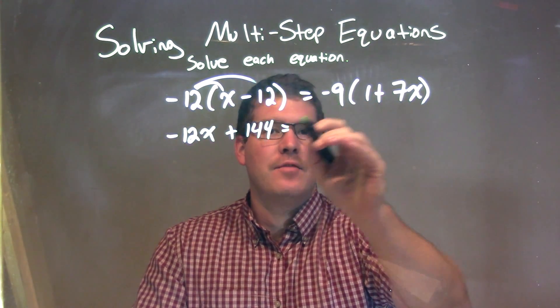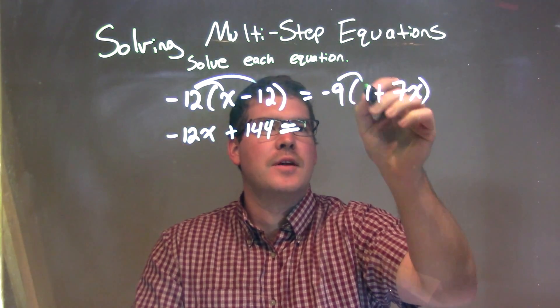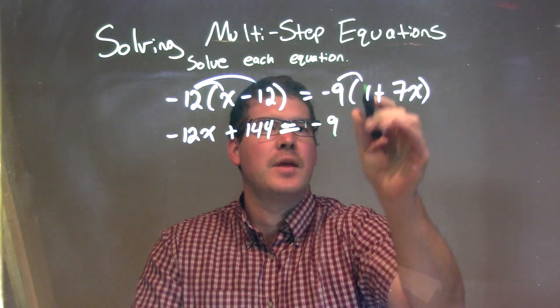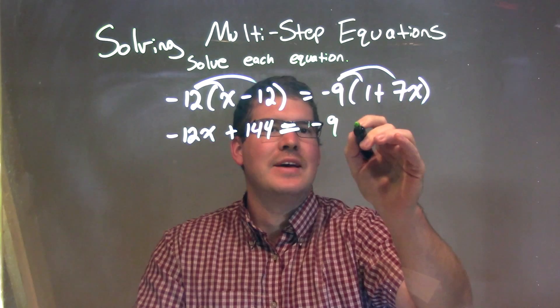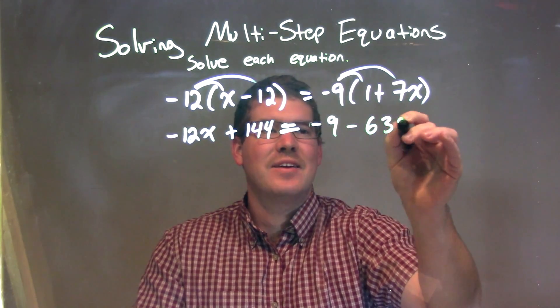Then we have the negative 9. Distribute the negative 9 across. Negative 9 times 1 is negative 9, and negative 9 times 7x is negative 63x.